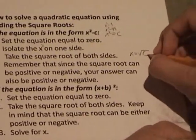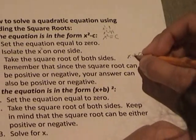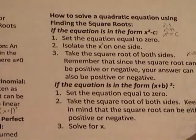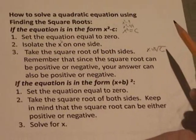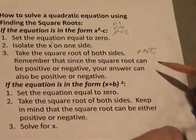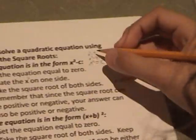So x equals the square root of c, positive or negative. Remember that since the square root can be positive or negative, your answer can also be positive or negative.